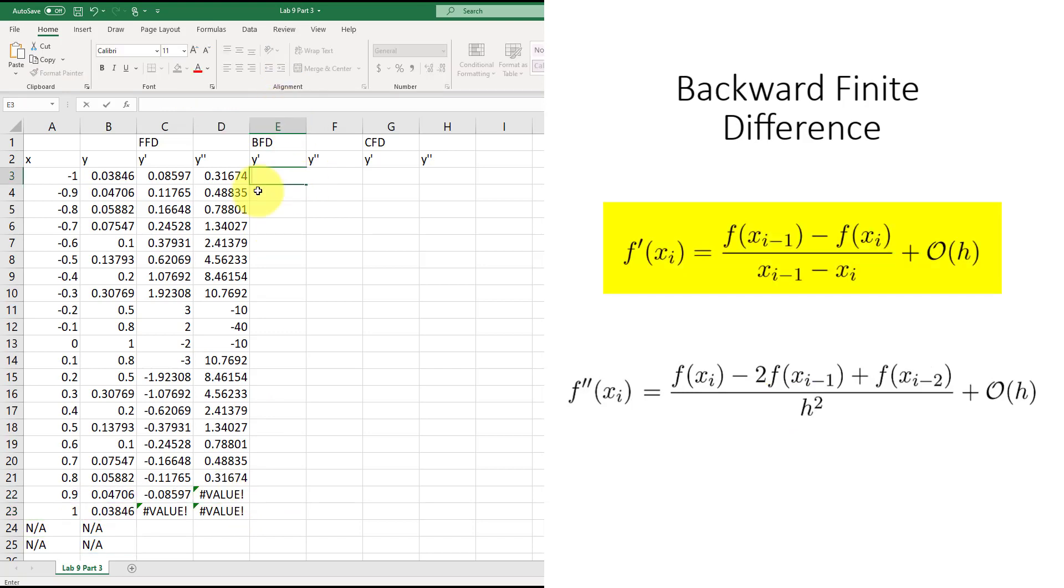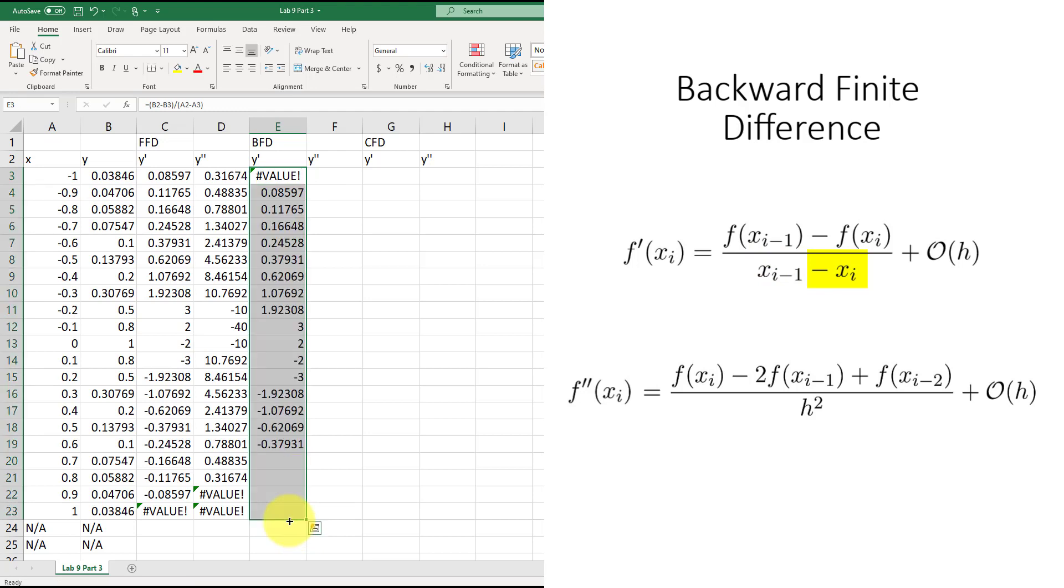Moving on to BFD, where the first derivative is equal to f(x_i-1) minus f(x_i) divided by x_i-1 minus x_i, and then go ahead and drag this. Here you can see the first derivative cannot be found since it depends on a previous cell which does not exist.